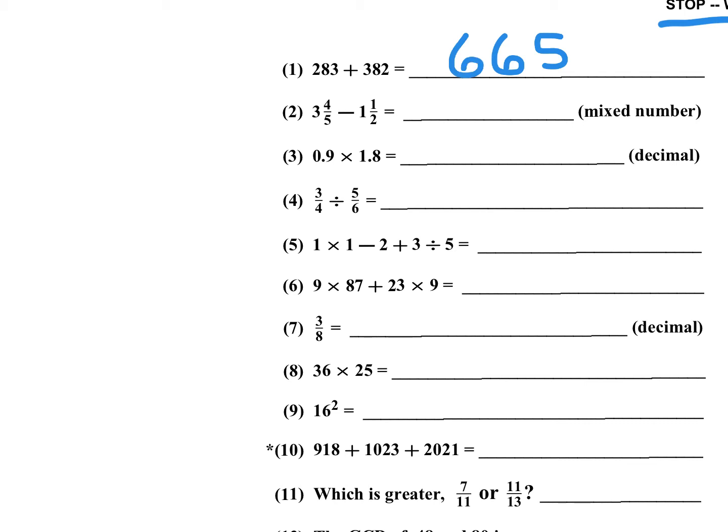Number two, they want the answer as a mixed number. So you have 4 fifths minus 1 half. We need a common denominator of 10, so you're going to have 8 tenths minus 5 tenths. That would be 3 tenths. And then 3 minus 1 is 2. If you have 4 fifths minus 1 half, what you can do is multiply 2 times 4, that's 8, and 5 times 1, that's 5. 8 minus 5 is 3, and your denominator is 10. 5 times 2 is 10. I'm only writing on the margins because I'm trying to explain for you. You cannot write on the margins. You can only write the answers down.